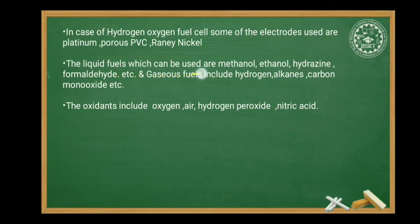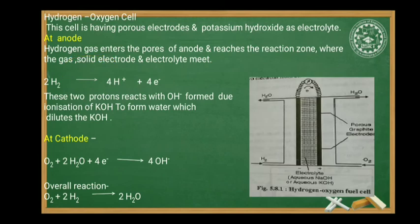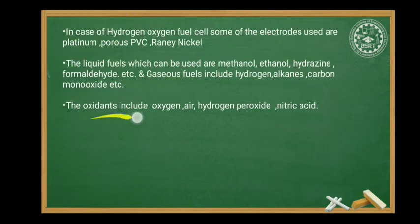The liquid fuels which can be used in fuel cells include methanol, ethanol, hydrazine, formaldehyde, hydrogen, and carbon monoxide. The oxidants used include oxygen, air, hydrogen peroxide, and nitric acid. If oxygen is not available, hydrogen peroxide can be used as an oxidant.